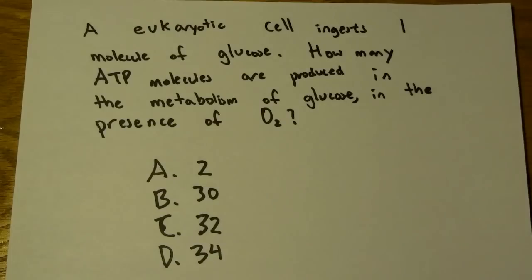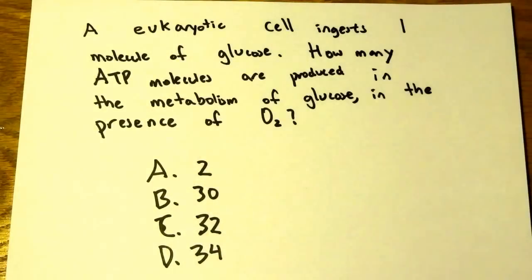Today we have a bio MCAT question of the day on glycolysis. The question asks: a eukaryotic cell ingests one molecule of glucose. How many ATP molecules are produced in the metabolism of glucose in the presence of oxygen?